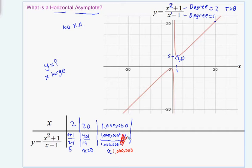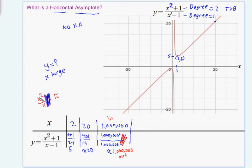So for large x values, your output is roughly the same as your input — we input a million, we get out roughly a million. It's not exactly a million because the plus 1 and minus 1 do play a very small role, but less significant the larger x becomes. For large x values, x squared plus 1 over x minus 1 is approximately what you'd get if the plus 1 and minus 1 weren't there: x squared over x. This simplifies down to just x — one x on top cancels with x on the bottom — so for our purposes this will work.